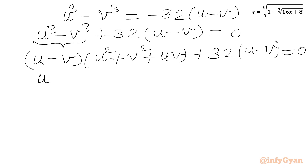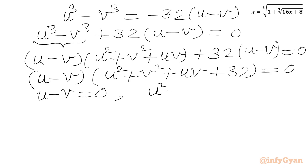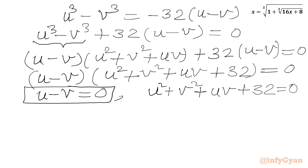Now u minus v is overall common. In the other bracket we will write u squared plus v squared plus uv plus 32, all equal to 0. Now we can apply the product-zero rule and write either u minus v equal to 0, or u squared plus v squared plus uv plus 32 equal to 0. We will solve both equations. From the first equation we get u equal to v.